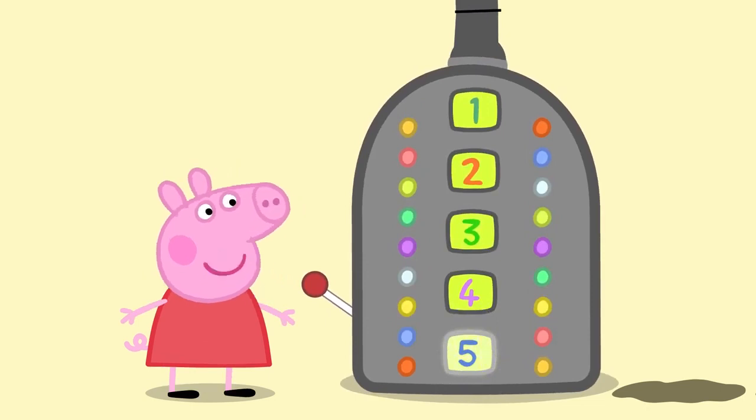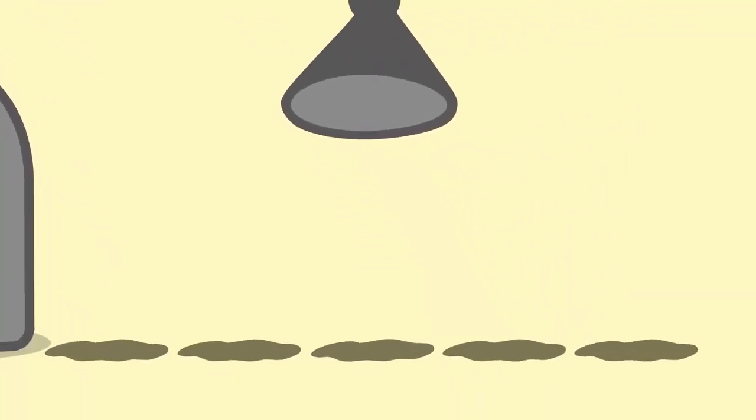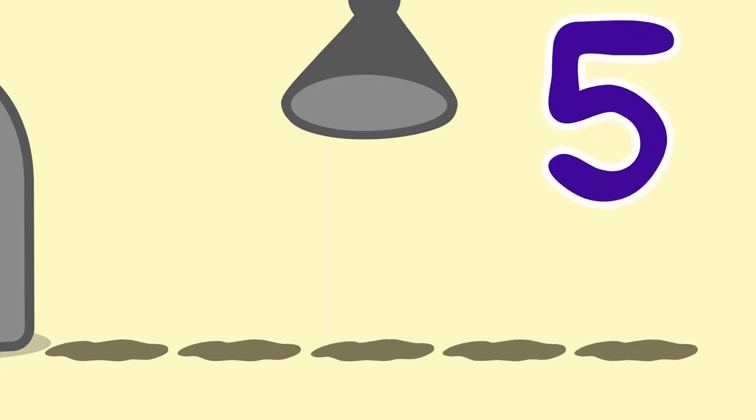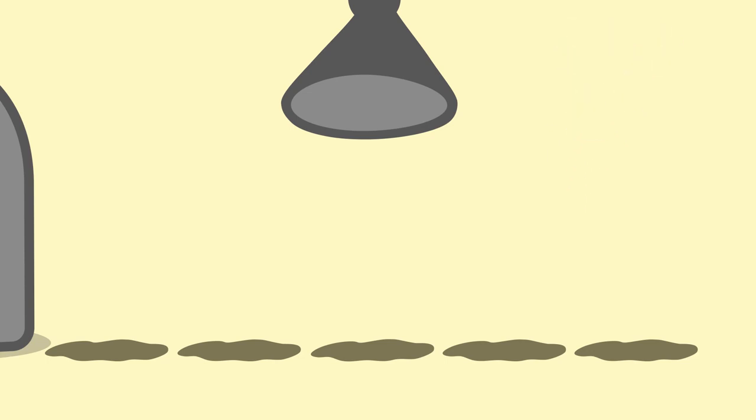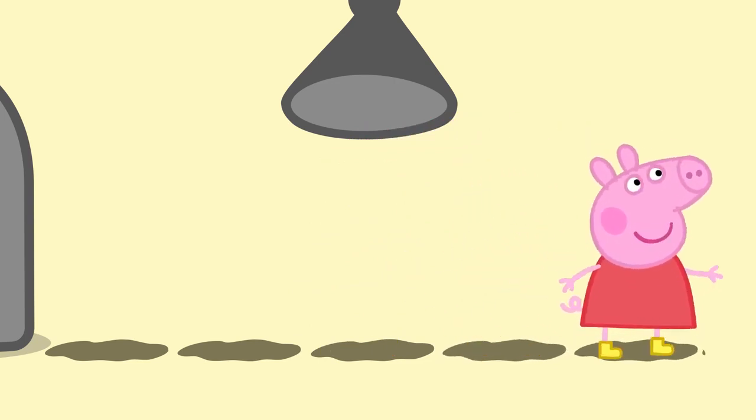Now the Beep Bop Boop Machine has landed on the number five! One, two, three, four, five! There are so many muddy puddles! Shall we count them all together? One, two, three, four, five! Great work! We have five muddy puddles! Peppa loves muddy puddles!